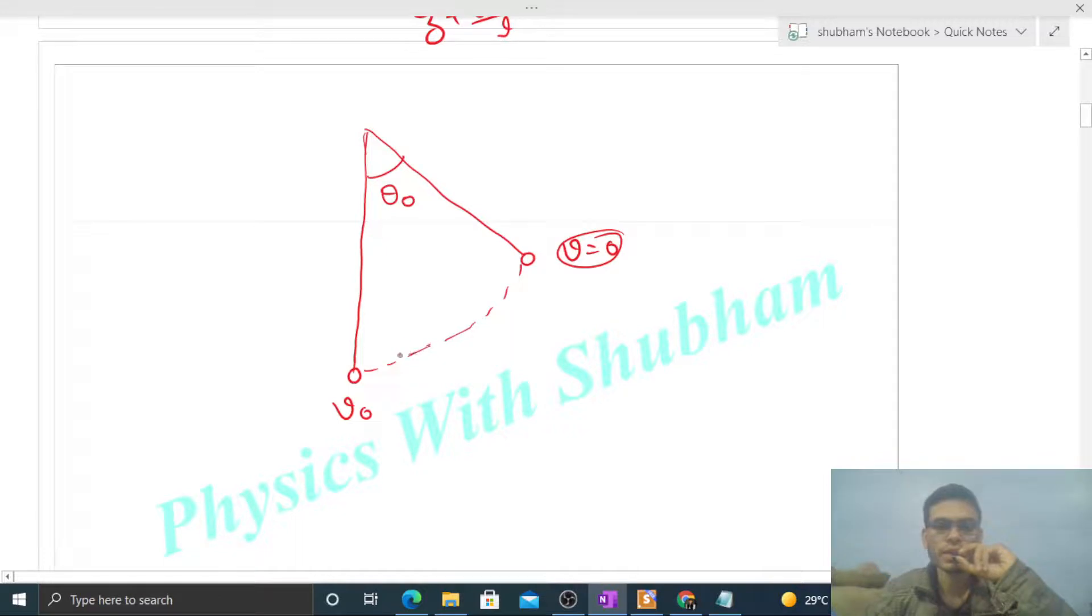Potential energy, how much has it decreased? You can see this length is L, so this length will be L into cos theta naught. Right? And total length is L, that is the length of the pendulum.